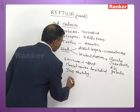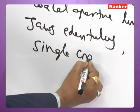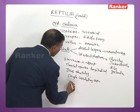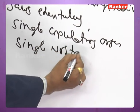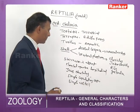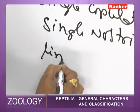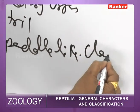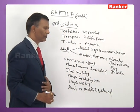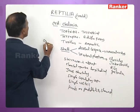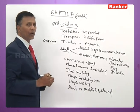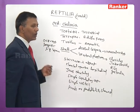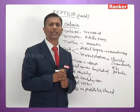Chelonians have a single copulatory organ and, unlike other reptiles, a single nostril. Limbs are paddle-like and clawed. They are all oviparous and are known for the longest lifespan among reptiles.